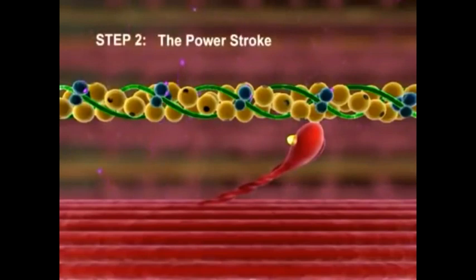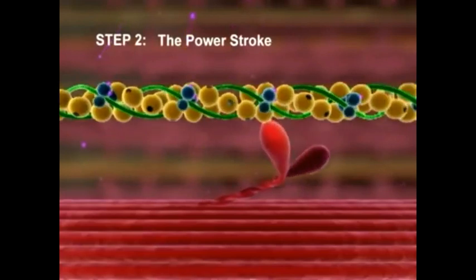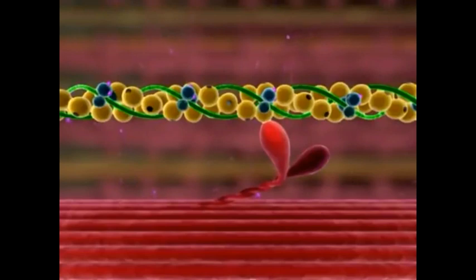Step 2: The power stroke. ADP is released and the activated myosin head pivots, sliding the thin myofilament toward the center of the sarcomere.